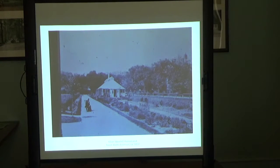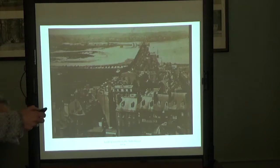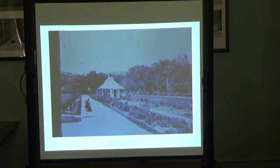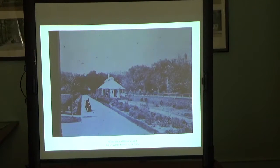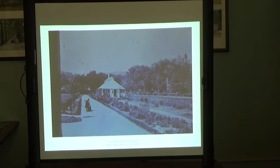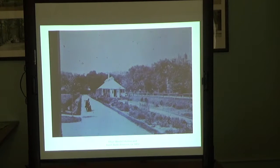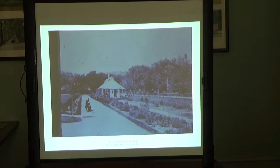Here we have Oliver Wendell Holmes and Ralph Waldo Emerson — there's the greenhouse. This is Beacon Street. I want you to see the split rail fence — it was very rustic originally. Do you see the slope? The original garden was four feet lower than it is right now. When the city did take it over a few years later, they filled in those four feet to make it street level, but it wasn't without sinkholes — it was tidal river under there. Here they are in front of the greenhouse, where they propagated flowers and had flower shows.